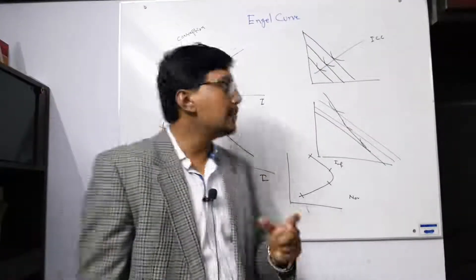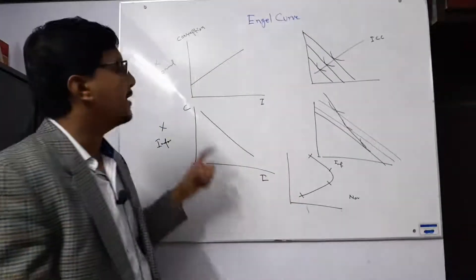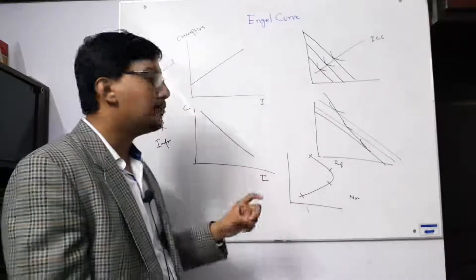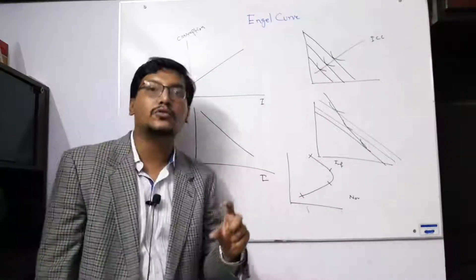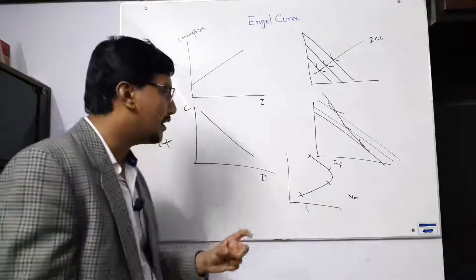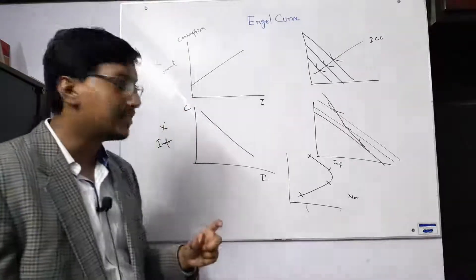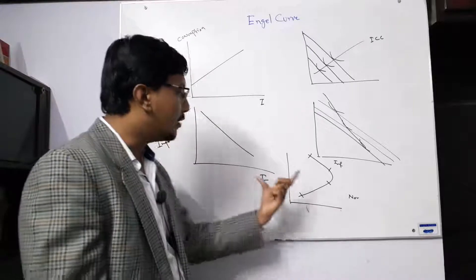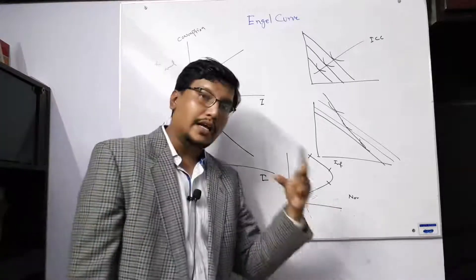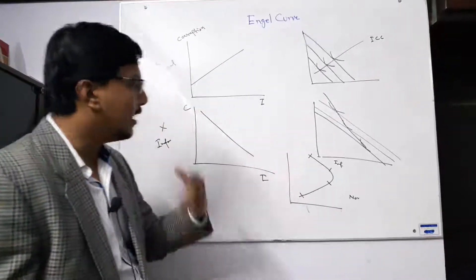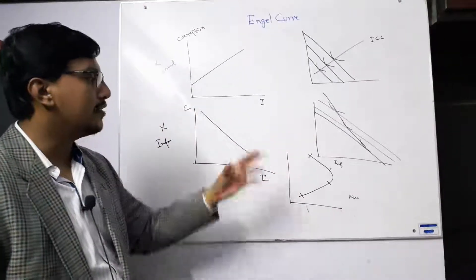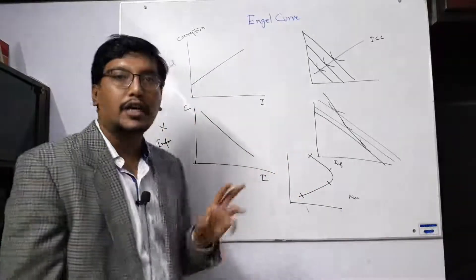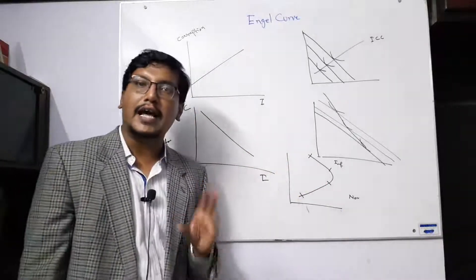So this is the total concept of the Engel curve. In totality, the Engel curve helps us understand how goods behave when income changes. When income increases and consumption increases, this is the normal part. When income increases and consumption decreases, the good is treated as inferior. This is the total concept of the Engel curve.